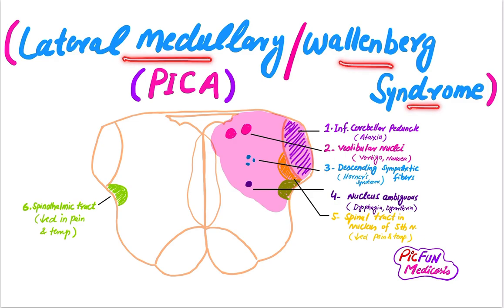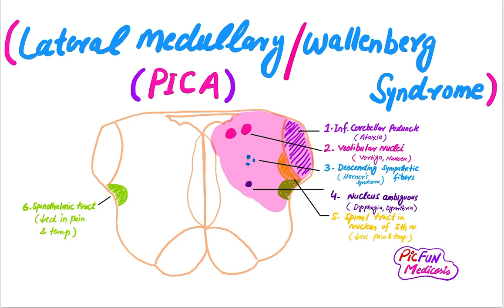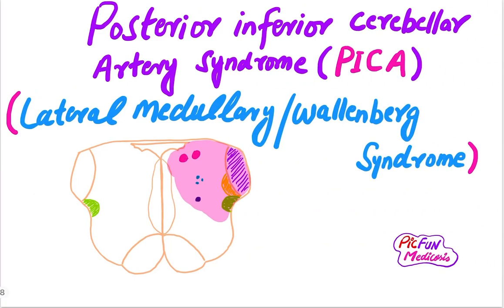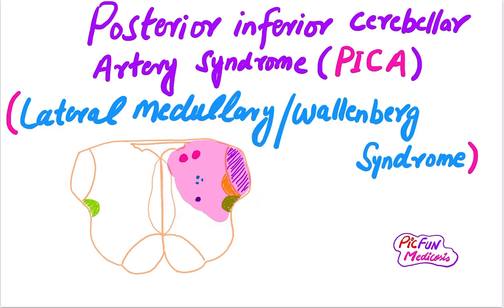It is also called Posterior Inferior Cerebellar Artery syndrome. This syndrome occurs due to the occlusion of the intracranial part of the vertebral artery or branches of the posterior inferior cerebellar artery. This syndrome occurs due to the involvement of six structures: inferior cerebellar peduncle, vestibular nuclei, descending sympathetic fibers, nucleus ambiguus, spinal tract and nucleus of the fifth cranial nerve.